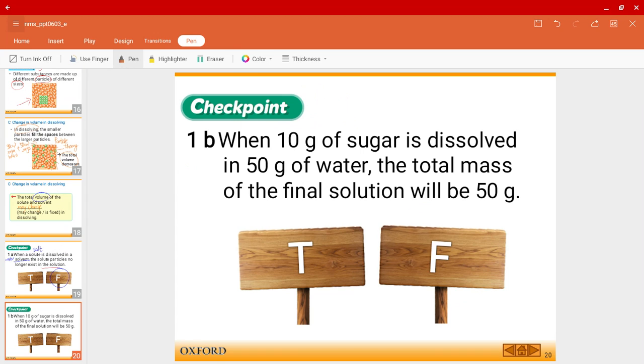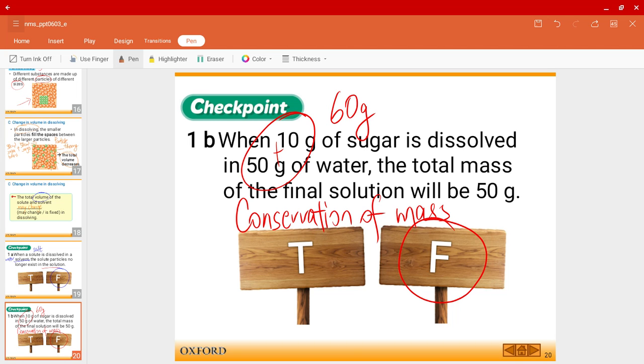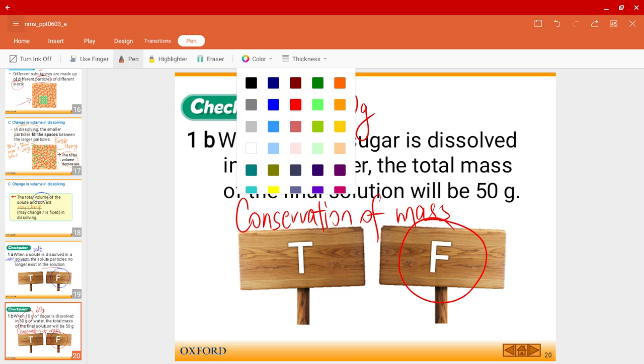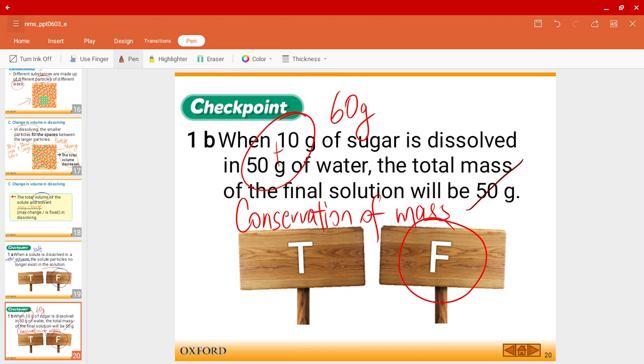Now, question B. When 10 grams of sugar is dissolved in 50 grams of water, the total mass of the final solution will be 50 grams. Is that true? No, it's not. Of course not. This is false. As I mentioned earlier, mass has to be conserved. Mass, let me write down conservation of mass, the concept where the mass will not change. So in the beginning of the reaction, in total, how many grams of reactants do I have? 60 grams. And at the end of the reaction, how many should I have? Of course, mass does not change. Prior to reaction and afterwards, this should be 60 as well, not 50.